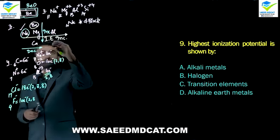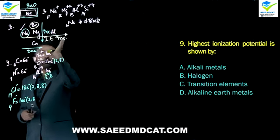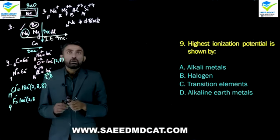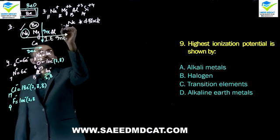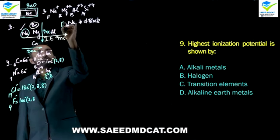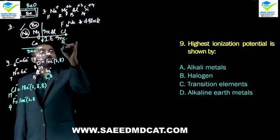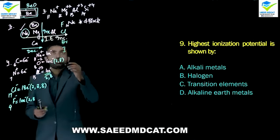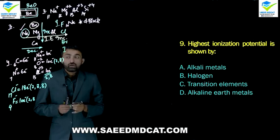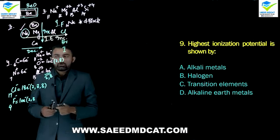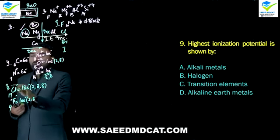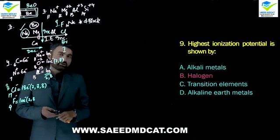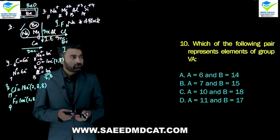Question 9: Highest ionization potential is shown by which element? Since ionization energy increases left to right, elements on the right side — fluorine, chlorine, bromine, iodine — have high ionization energies. So among the given options, halogens have relatively higher ionization energy. The answer is beta option, as halogens show the highest ionization energy among the given choices.